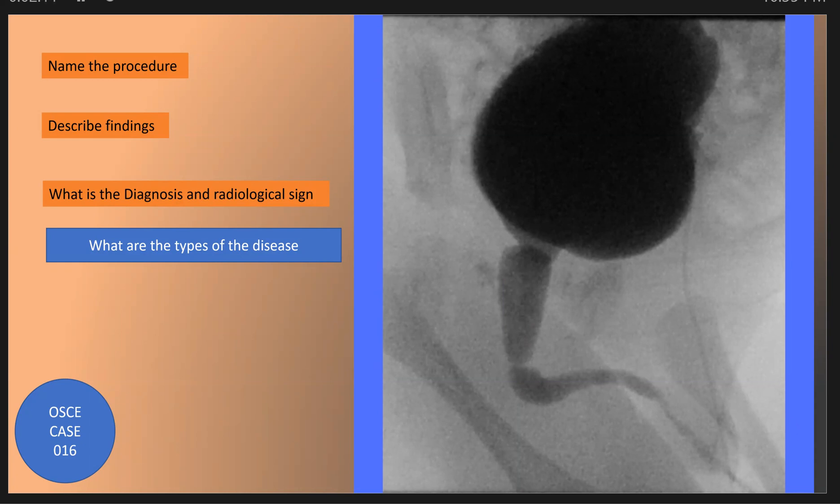Type 2 is rare. Type 3 is a circular diaphragm with central opening in the membranous urethra.